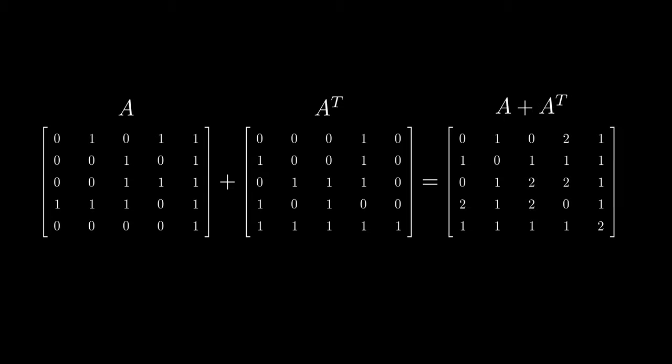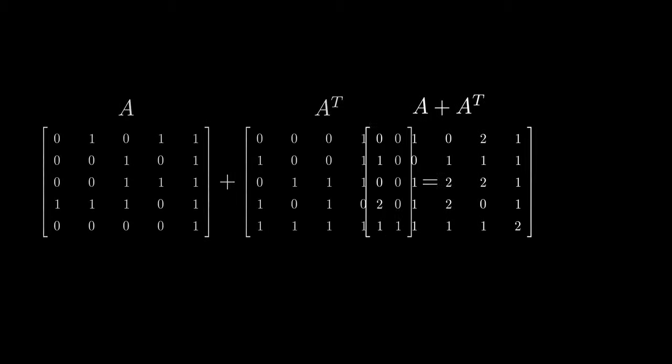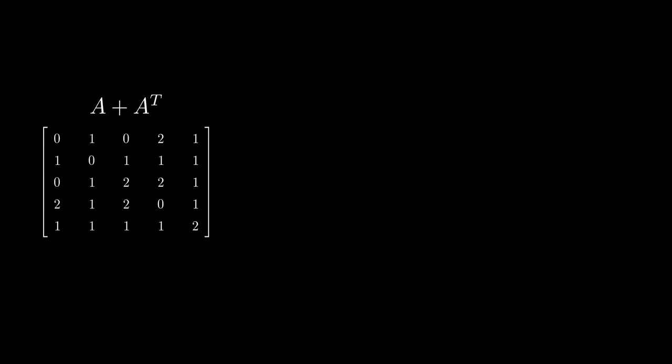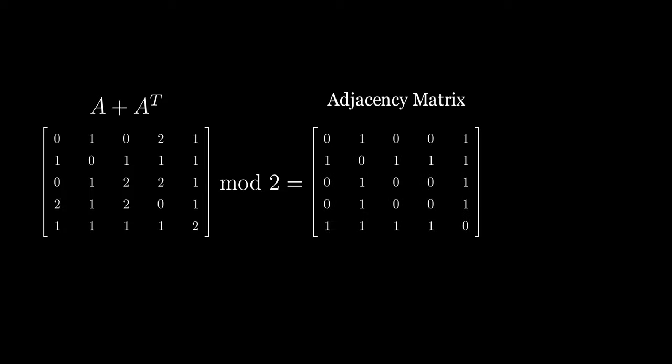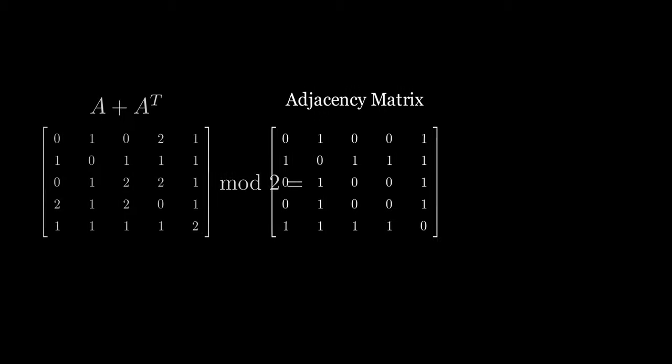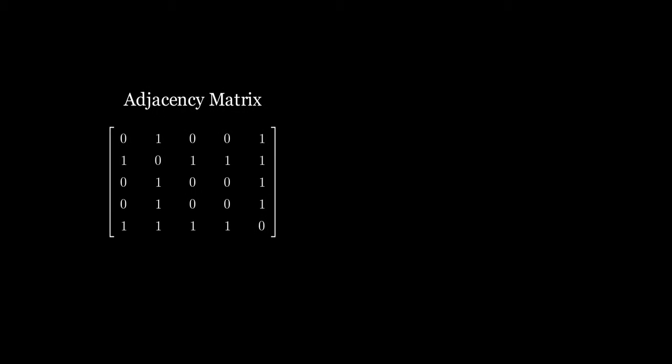But, this symmetric matrix will have a bunch of pesky twos everywhere. No worries, if we make the twos into zeros by taking the matrix mod 2, we get a symmetric binary matrix that can be used to represent a graph, namely, this one.